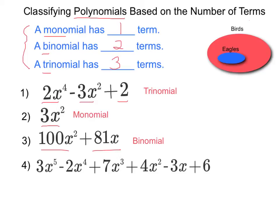And finally this last one has one, two, three, four, five, six terms. There is no specific label for a six term polynomial. So polynomial is the only word we can apply to this.